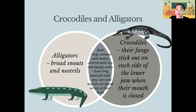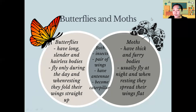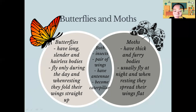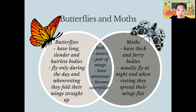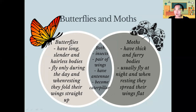Now we have butterflies and moths. Butterflies have a long, slender, and hairless body, while moths have thick and furry bodies. Butterflies fly only during the day while moths fly at night. When resting, butterflies fold their wings straight up, while moths spread their wings flat.